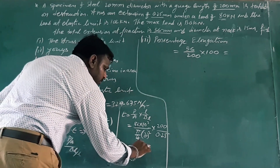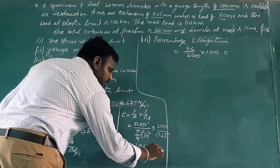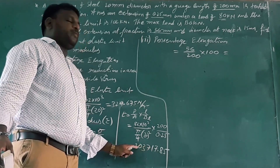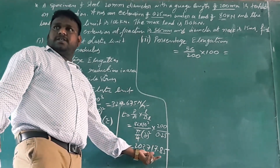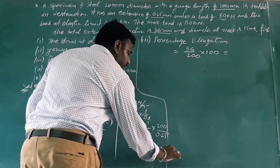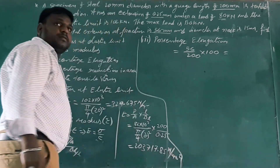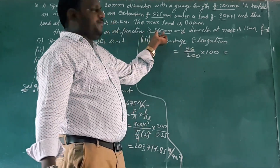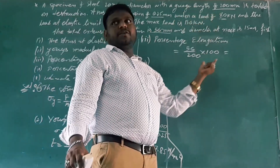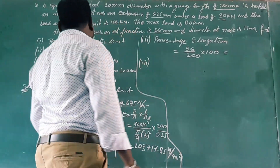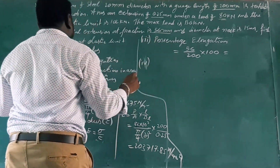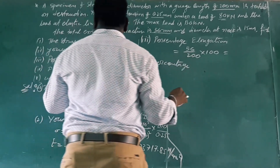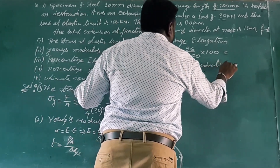The percentage of elongation works out to 28%. Now for the percentage of reduction in area: we use the formula — original area minus final area, divided by original area, times 100.